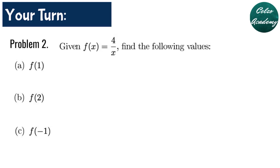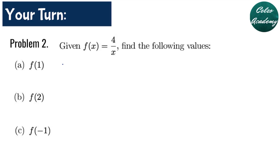Now let's go over the answers for problem number 2. Given f of x is equal to 4 over x, find the following values. Letter A, f of 1 — our x value is 1, so we have 4 divided by 1, which is equal to 4. For question B, f of 2 means our x value is 2, so we have 4 divided by 2, and that is equal to 2.